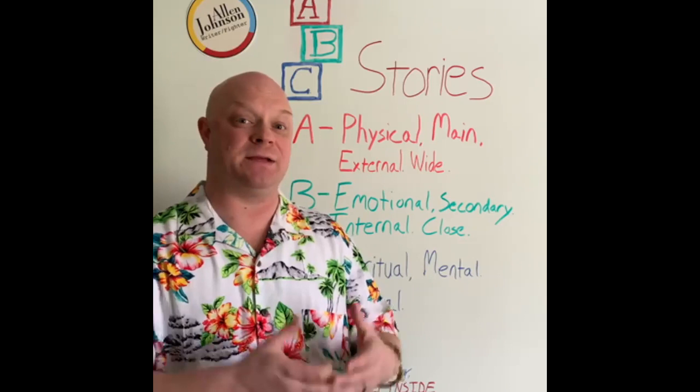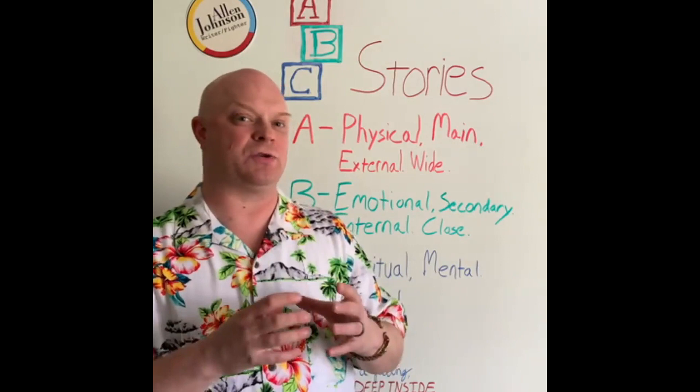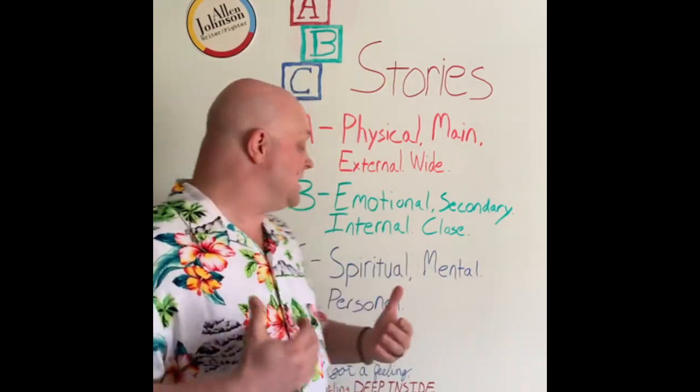Those allies and relationships are usually influenced by this B storyline — it's a closer-knit group of people rather than the external goals of the A story. The C story is usually your spiritual or some kind of mental goal.